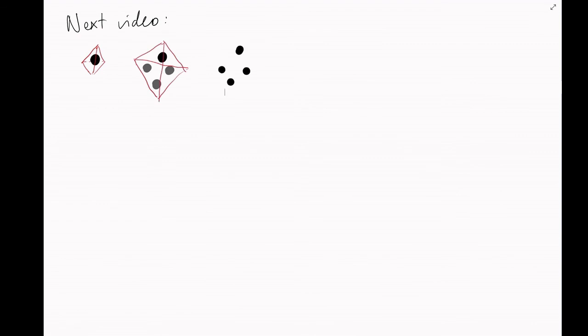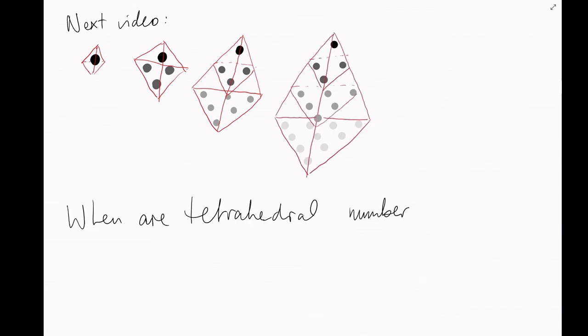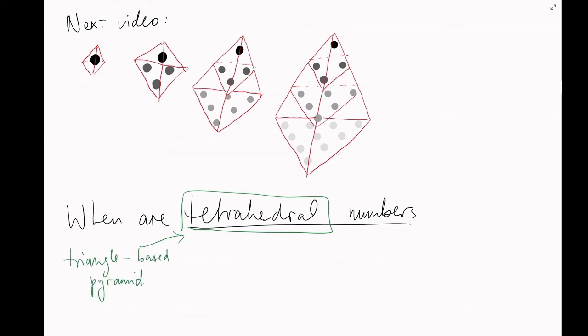In the next video, we're going to ask the similar question, when are tetrahedral numbers, that is, numbers of dots arranged in a triangle-based pyramid, hopefully my diagram makes sense, also square numbers.